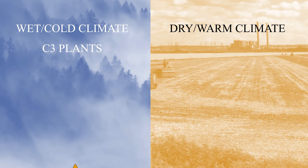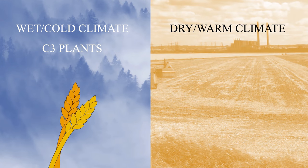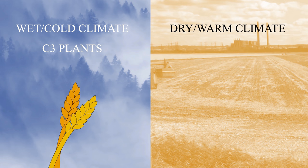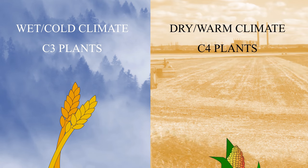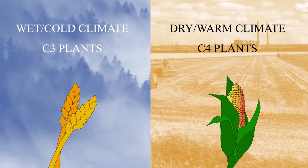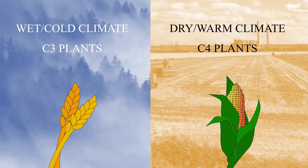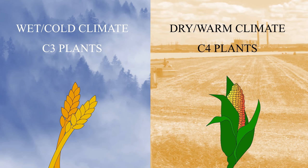Why do C3 plants, such as wheat, thrive in climates that are wet and cold, while C4 plants, such as maize, have the advantage in hotter, drier climates?